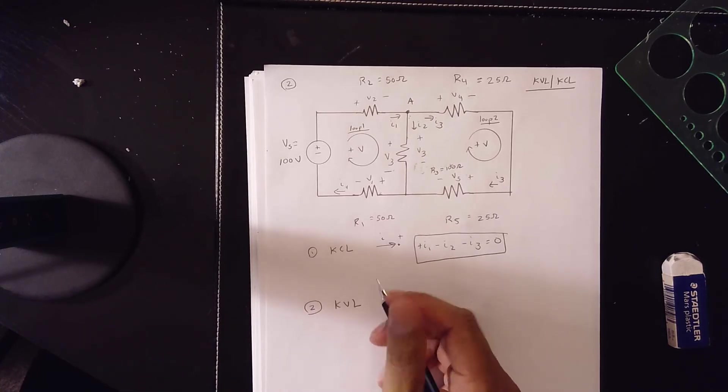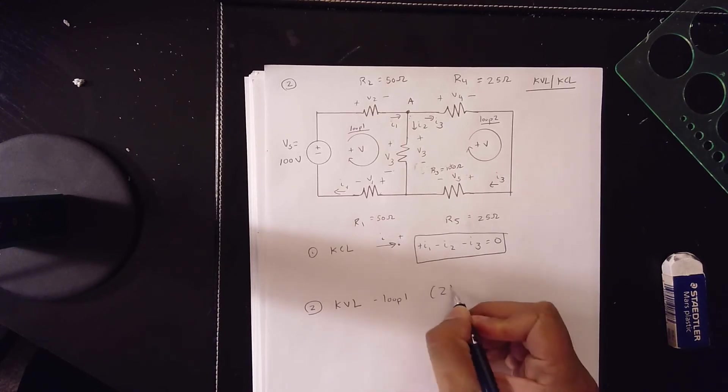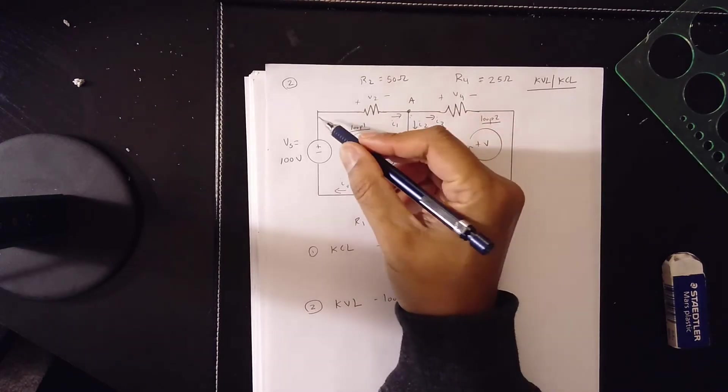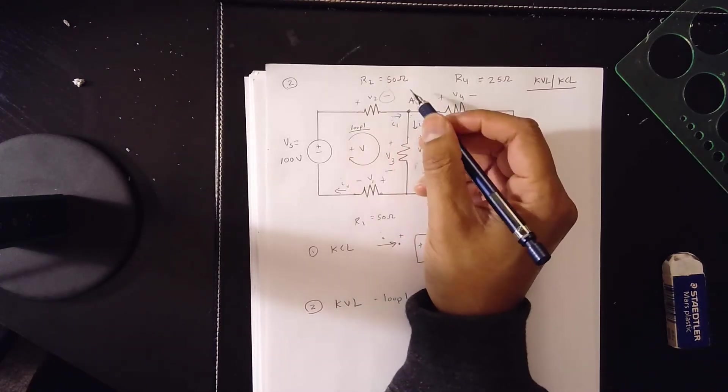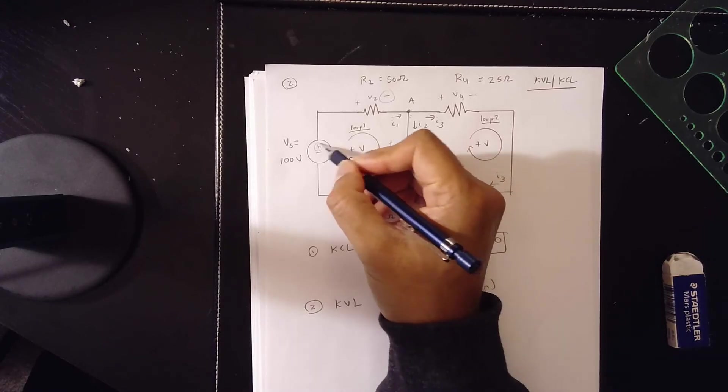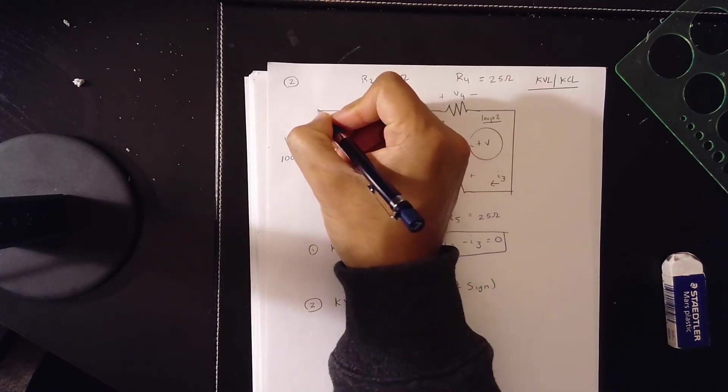So then we'll write KVL for loop 1. And then we're going to use the second sign convention. So for loop 1, what happens? We start here. We circle this. Then we circle here as we go around. This sign and this sign. So let's start here. Let's start with Vs.